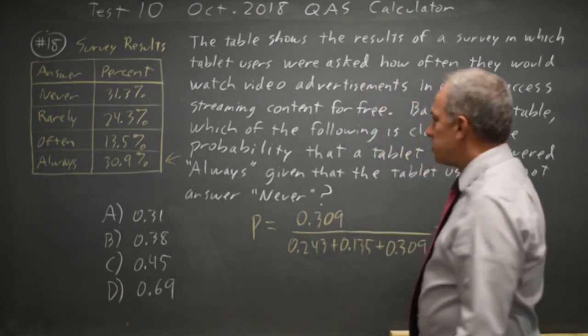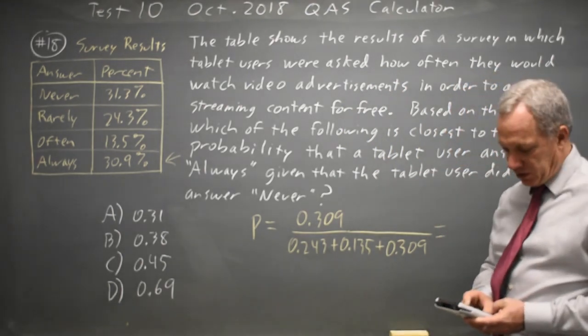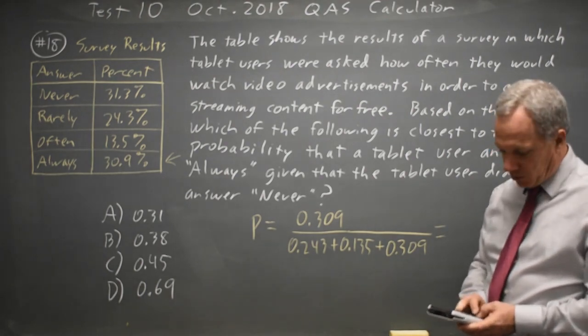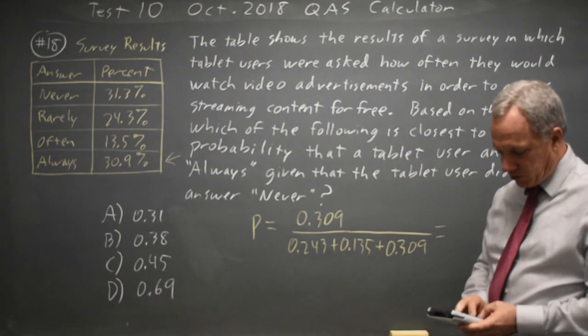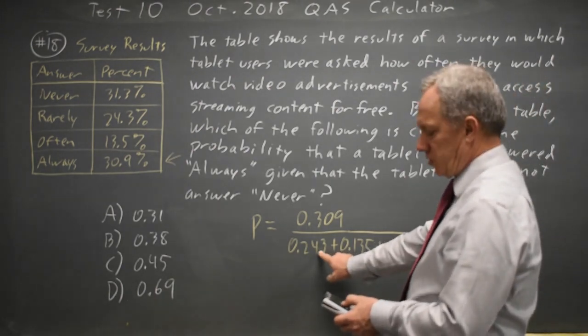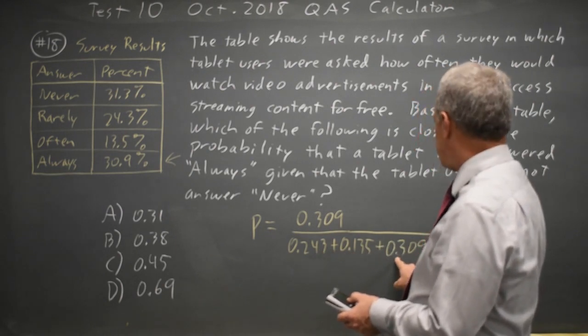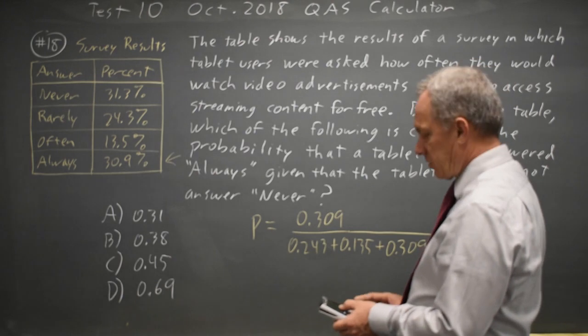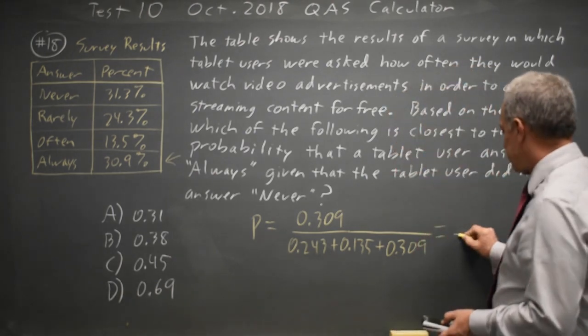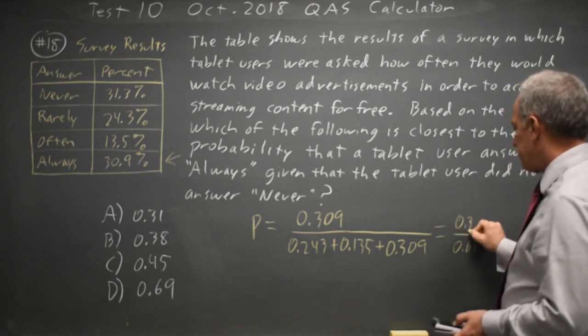You can go either direction, but I'm going to go with the numbers directly from the table because that's often safer. If I add 0.243 plus 0.135 plus 0.309, and hopefully I wrote this correctly, 243, 135, 309, that's everything except never, which is what we wanted. That's a denominator of 0.687, and our numerator is 0.309.